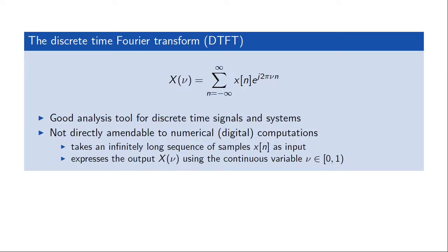The discrete time Fourier transform is a good tool for analyzing discrete time signals and systems. However, one thing it is not very good for is numerical computations. The transform involves a sum over an infinite number of terms. We cannot generally collect an infinite number of samples of a signal, we cannot compute infinite sums, and even if we could we wouldn't be able to store the result, which is a continuous function over normalized frequencies.